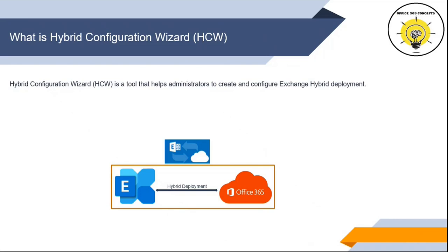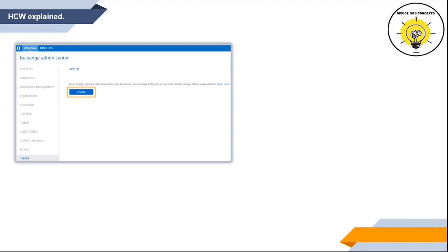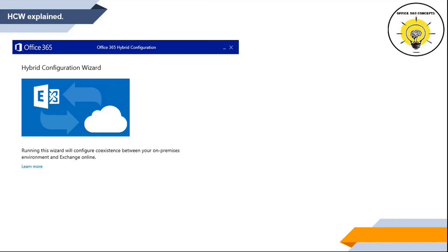We can download Hybrid Configuration Wizard from multiple ways. If you are using Exchange Server 2013, 2016, or 2019, you can download the latest version of Hybrid Configuration Wizard from on-premise Exchange Admin Center. Or you can simply type the URL in Internet Explorer to download it. When you launch HCW, you will see this homepage.